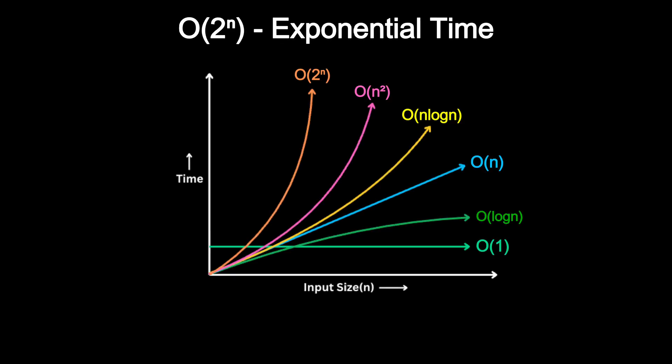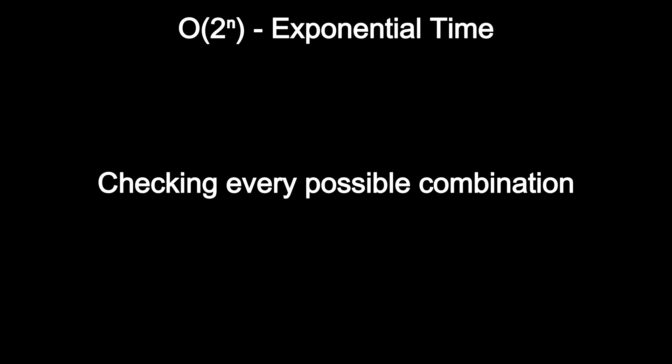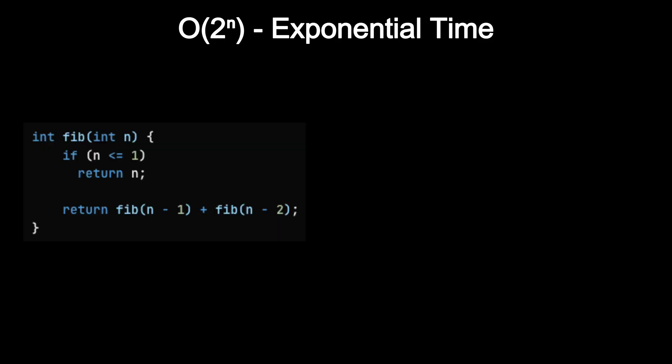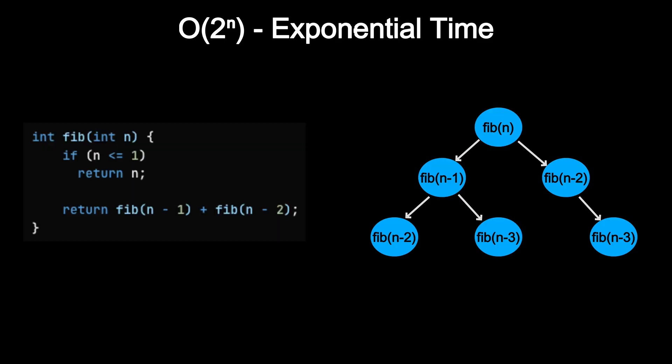Next, exponential time. Exponential time algorithms usually appear when we try to solve a problem by checking every possible combination. Think of it as the opposite of binary search. Instead of eliminating half the work at each step, you are often doubling the work with each extra input element. This happens in problems where each element can branch into multiple recursive calls.